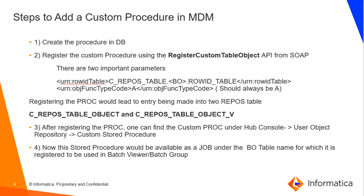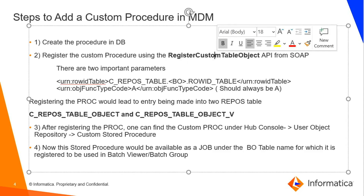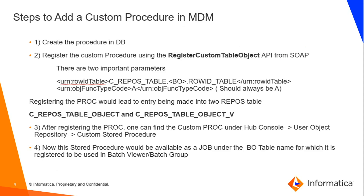Let's look at the steps to add the custom stored procedure. First and foremost, we need to create the procedure in the database. Once the procedure is created, we have to let MDM know that there is a procedure, and we can do that by using an API known as register custom table object. We have to pass two important parameters: one is row ID table, which is the row ID for the BO for which we want to register this custom procedure.